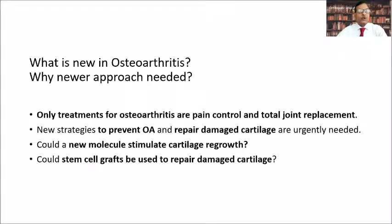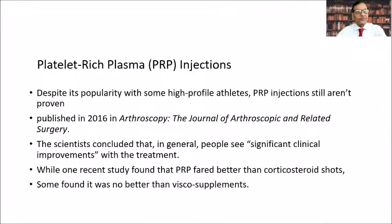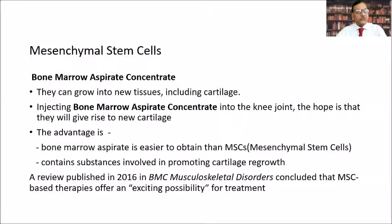What is new in osteoarthritis? So far, only treatments are pain control and total joint replacements. New strategies to prevent OA and repair damaged cartilage are urgently needed. Could new molecules stimulate cartilage growth? Could stem cell grafts repair damaged cartilage? There are some encouraging results. Platelet-rich plasma (PRP) injections are one option, though despite popularity with high-profile athletes, PRP injections are still not proven. Mesenchymal stem cells, given as bone marrow aspirate concentrate intra-articularly, are given in the hope of generating new cartilage.